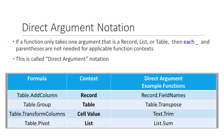For example, the context for the Table.AddColumn function is a record, and we can use the Record.FieldNames function in direct argument notation. In a similar way, we can use Table.Group on the table groups with Table.Transpose, Table.TransformColumns on cell values with the Text.Trim function, and the Table.Pivot function with the context of list with the List.Sum function. We'll now look at two examples of modifying the same function using each underscore and direct argument notation.